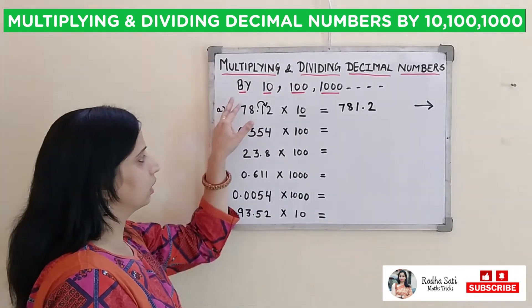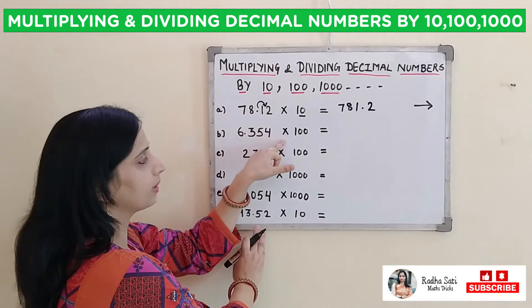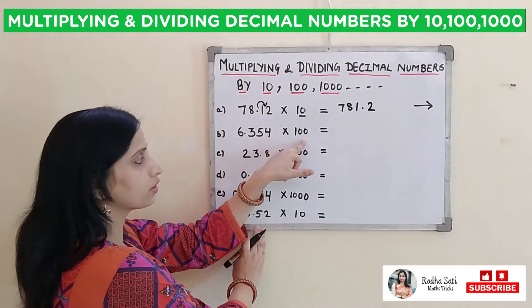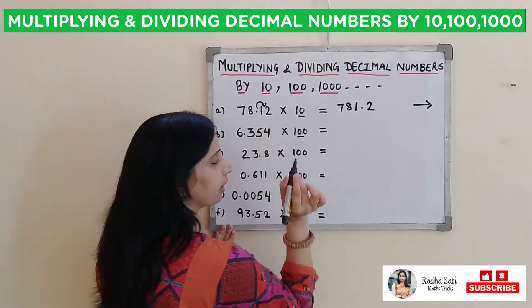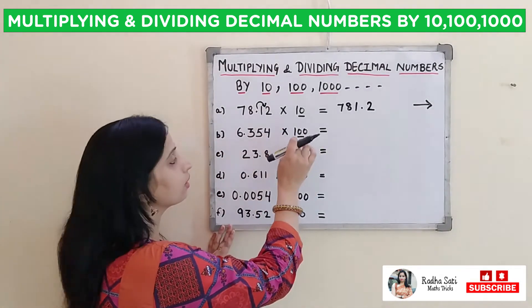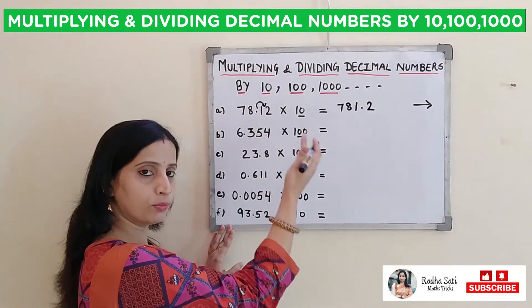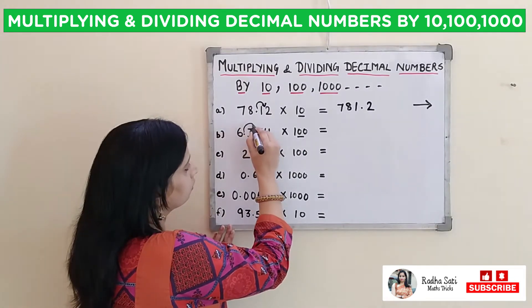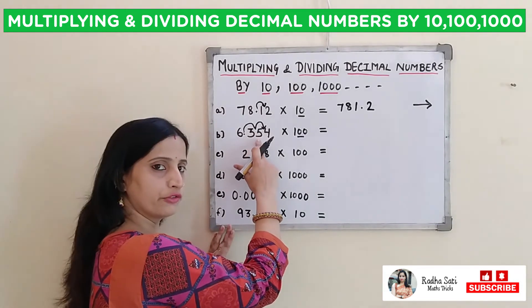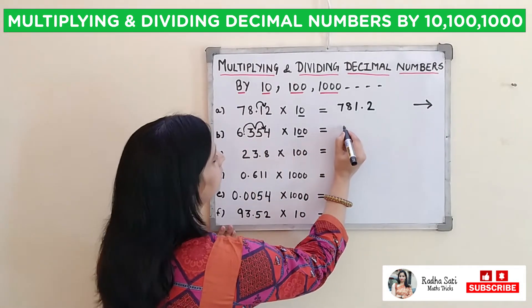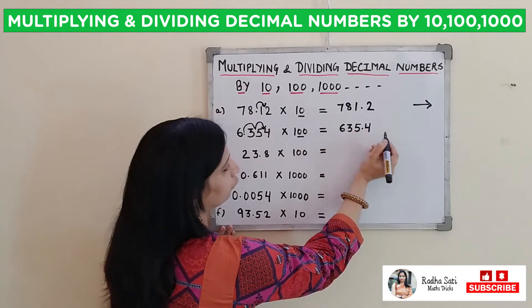The second one is 6.354 multiplied by 100. We will check the number of zeros — there are 2 zeros in 100. So while multiplying, our decimal will shift to the right hand side by 2 places, first 1 and 2. That means our decimal will come after 5. So the answer will be 635.4.